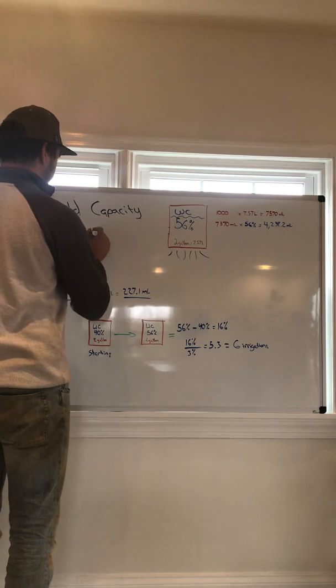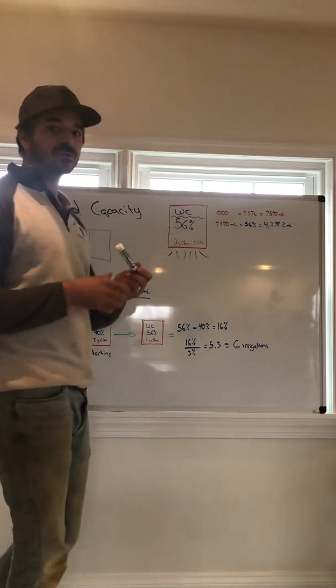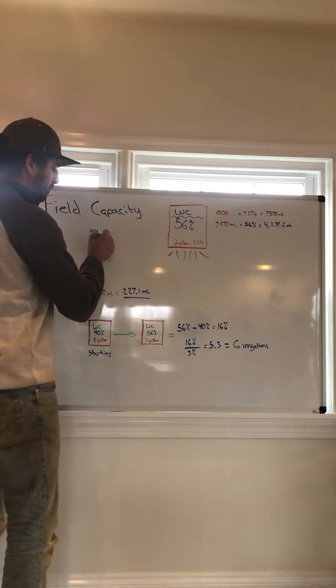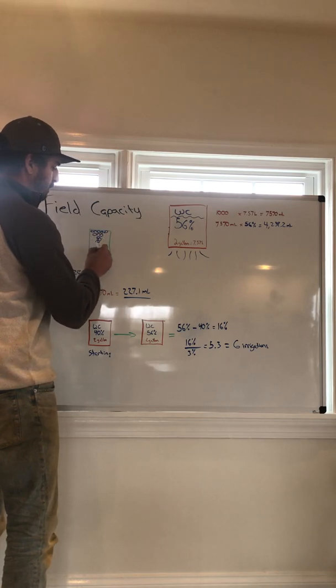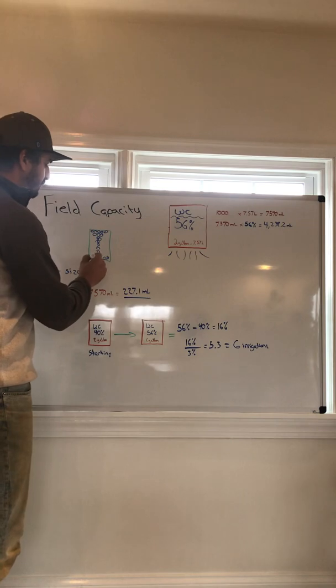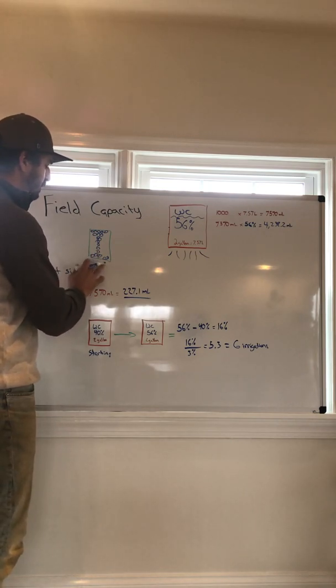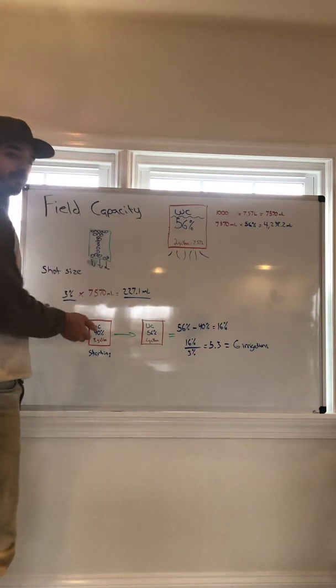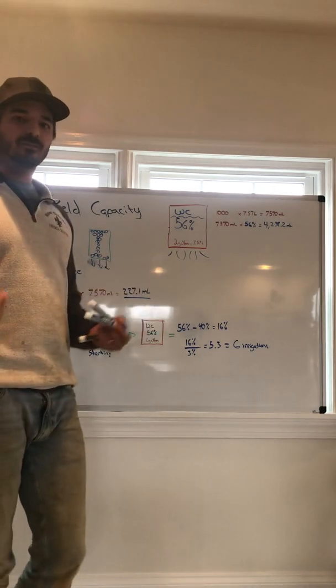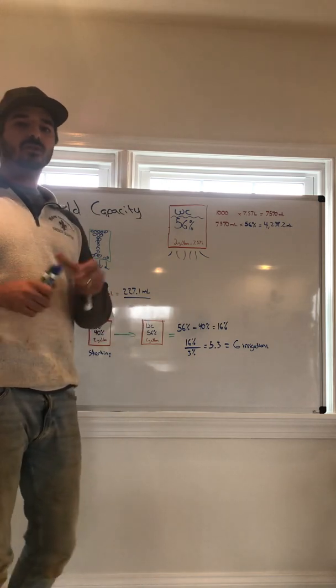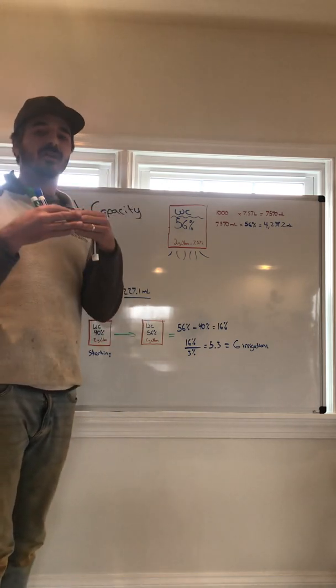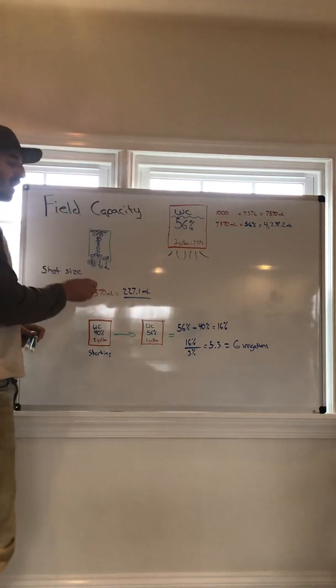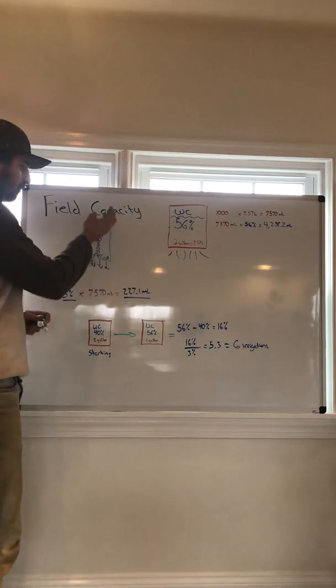Now, channeling means that in your medium, you apply too large of an irrigation or too frequent of irrigations, and the water, instead of being absorbed by the medium, starts to pull down and out because the greatest acting force on water in your medium is gravity.